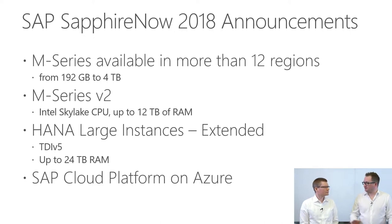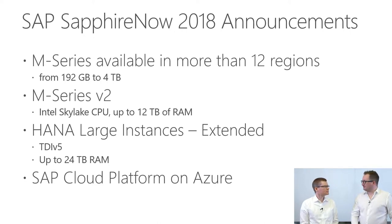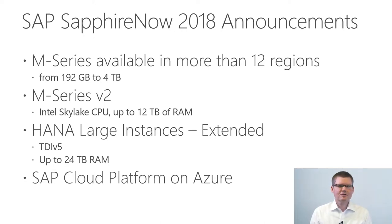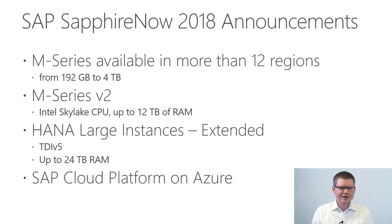The compute power for M series ranges roughly from 192 GB of RAM up to 4 TB. That's innovation, but we have even more. Microsoft has announced the 12 terabyte version of M series — M series version 2. This is in development and more details around the timetable will be coming in the future. It's based on the latest Intel CPU and will be certified for SAP HANA systems up to 12 terabytes.